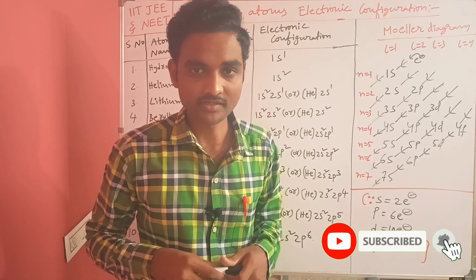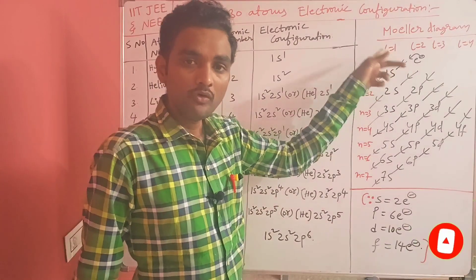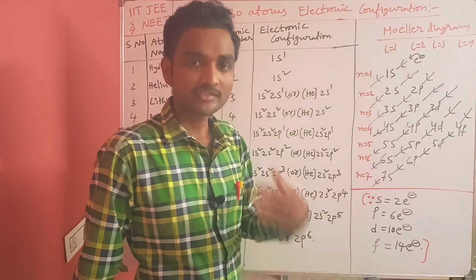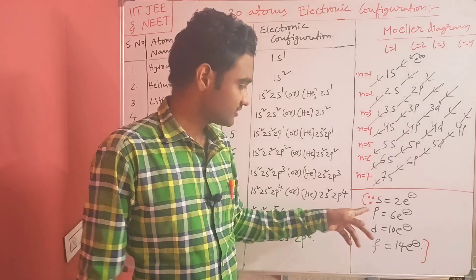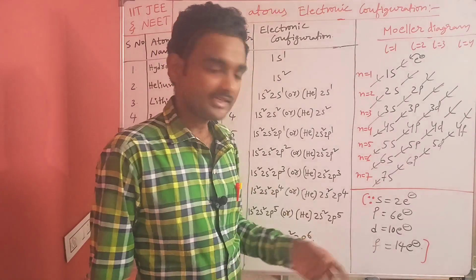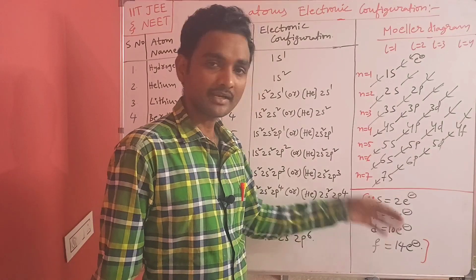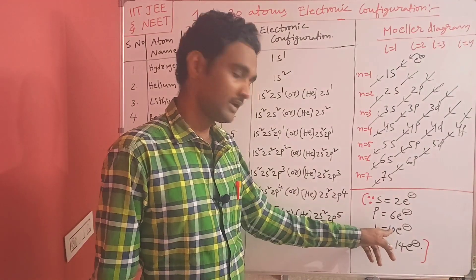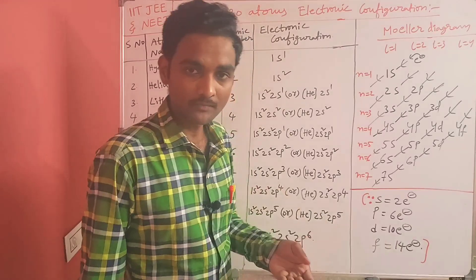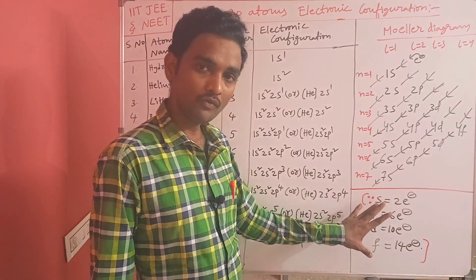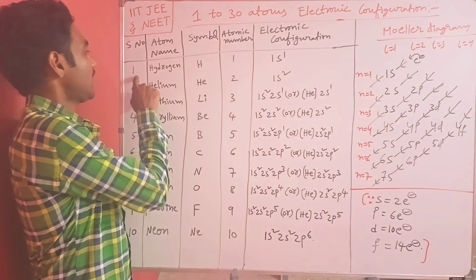Before we go further, remember the Moeller diagram. Also remember the capacity of orbitals: s orbital can hold 2 electrons, p orbital can hold 6 electrons, d orbital can hold 10 electrons, and f orbital can hold 14 electrons.